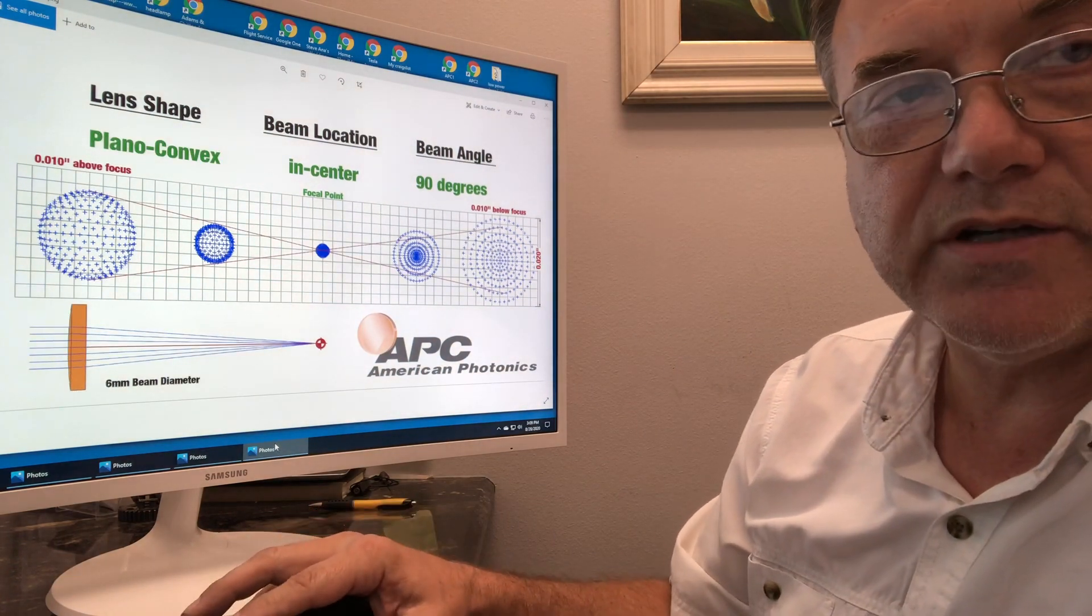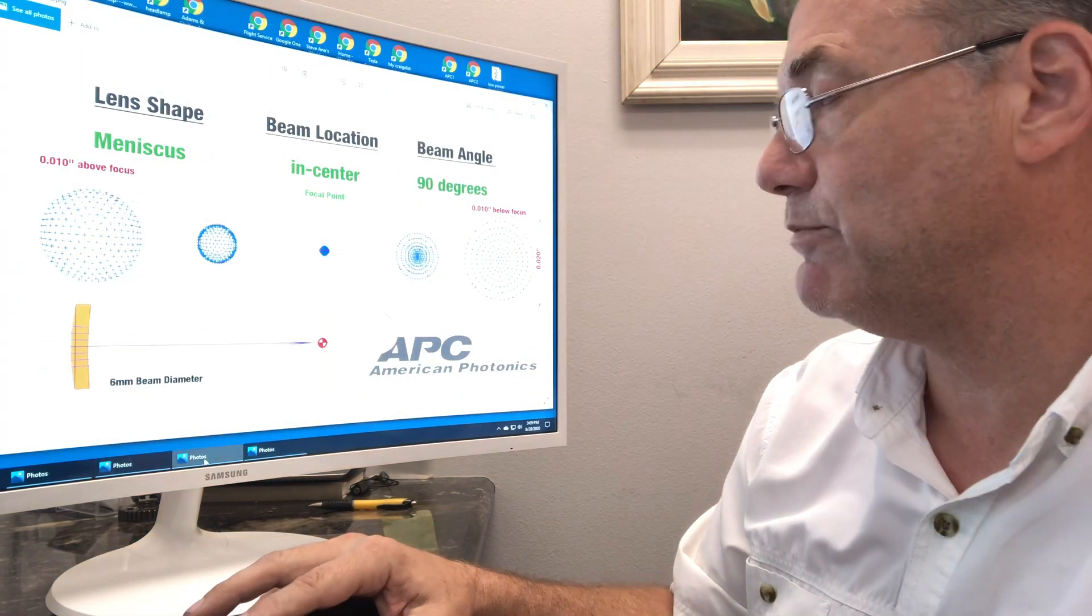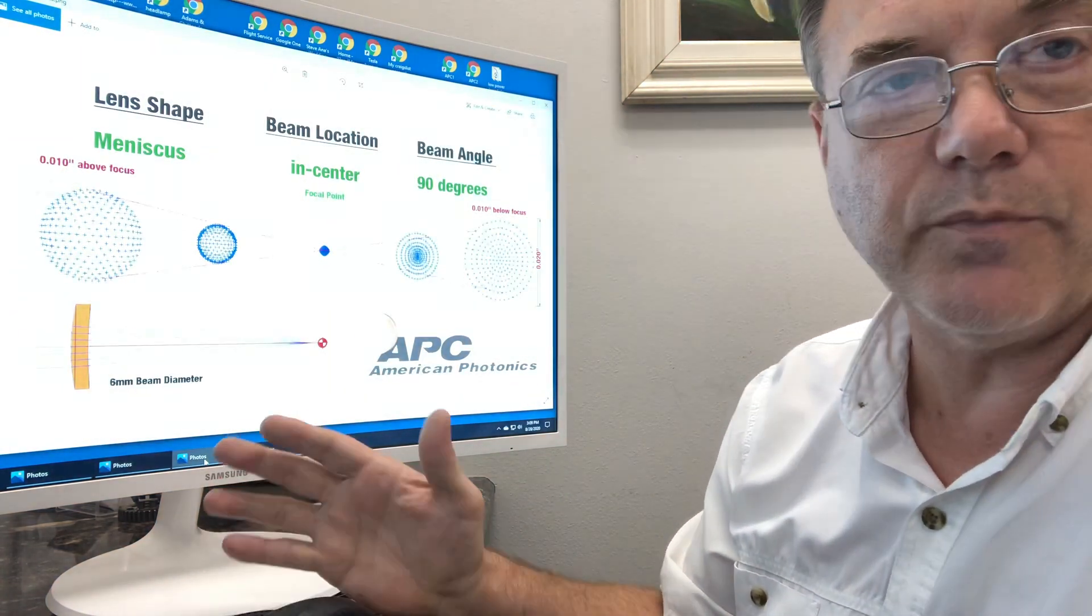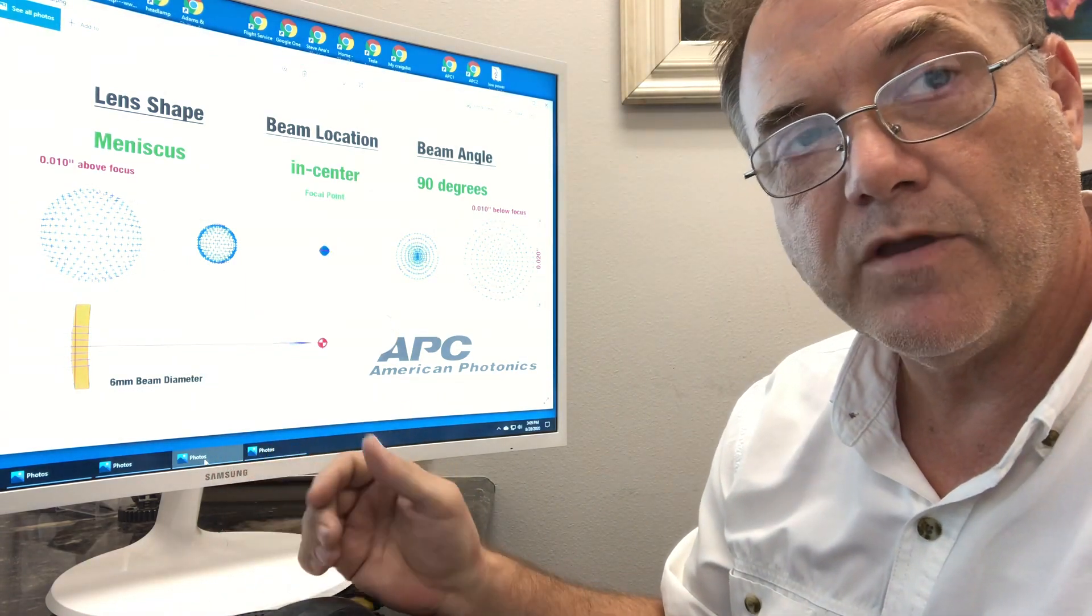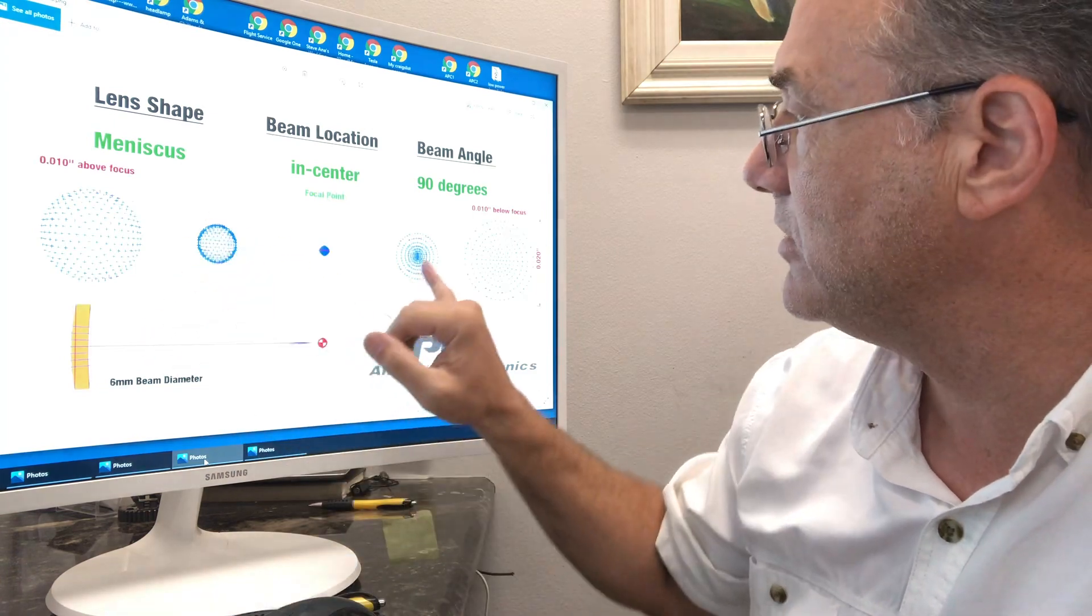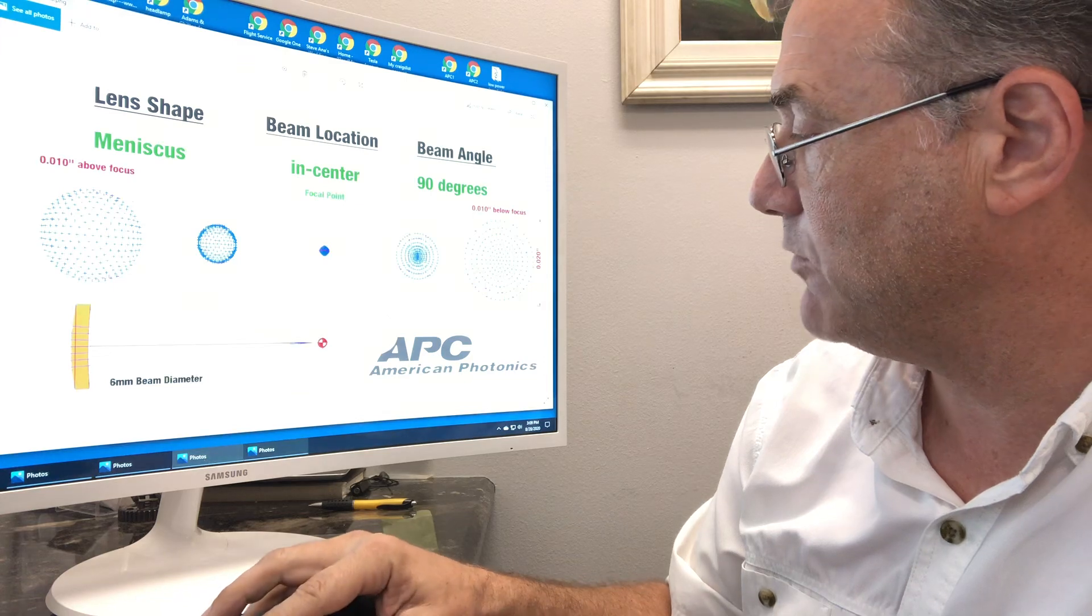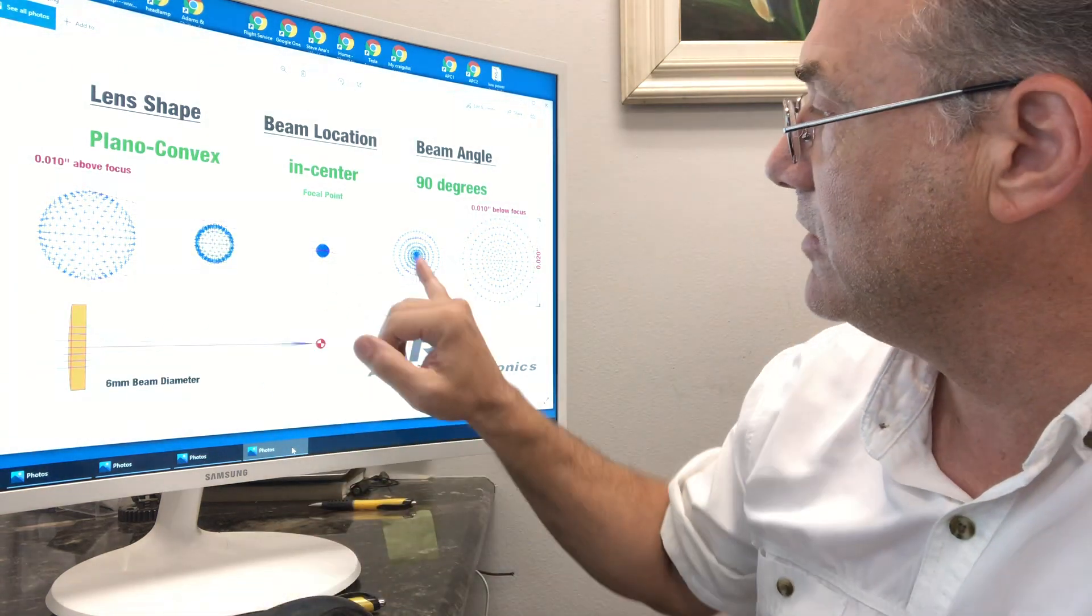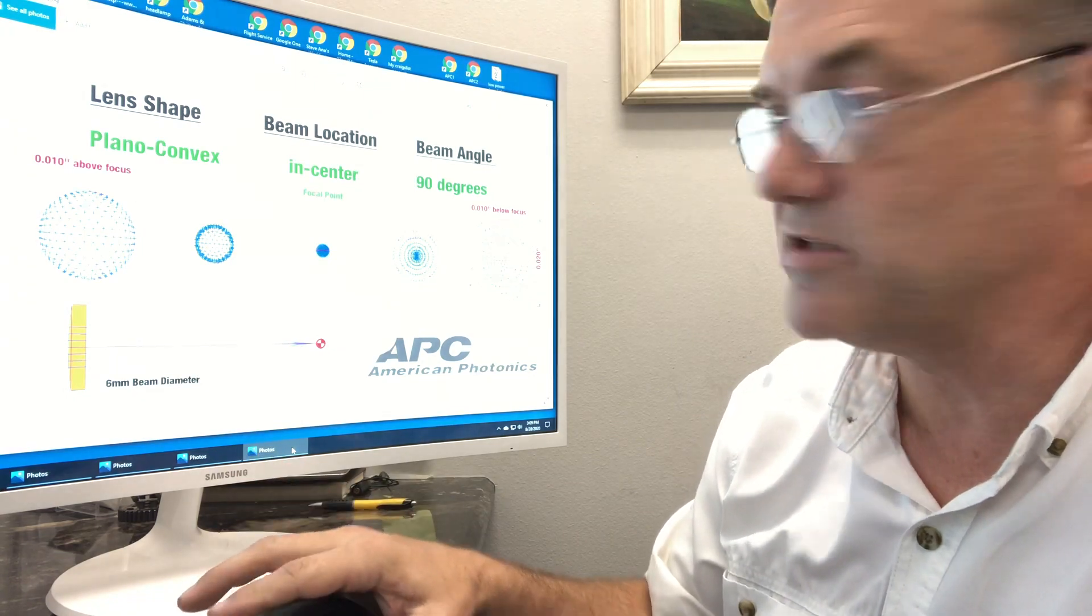So it's not a real big difference, the meniscus is absolutely better, but I've had some people argue with me, optical engineers, who actually say the plano-convex might be better for cutting, because of this higher energy density here, and this higher energy density in the center of the plano-convex here. It's arguable. I do believe the meniscus is better, though.